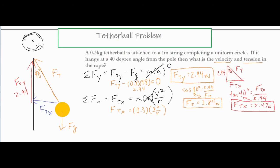There's a few different ways I could have went about this problem. I decided to use the cosine of 40 degrees. Cosine is adjacent. So I already have my adjacent side of 2.94 over the hypotenuse of FT. If you cross multiply these, the FT flips over here. It's basically 2.94 divided by the cosine of 40 degrees. And we have our first answer, FT equals 3.84 Newtons.